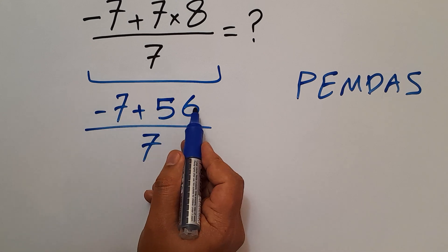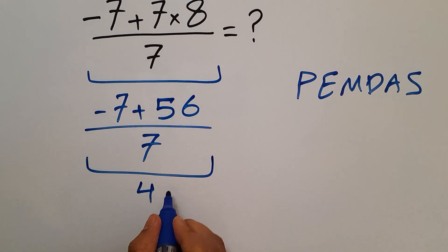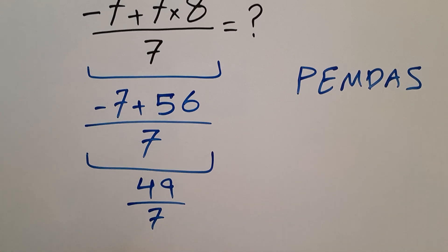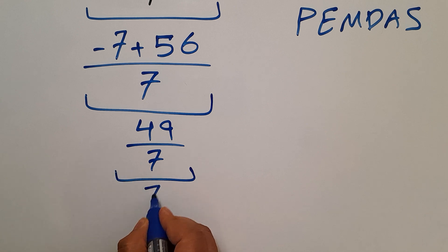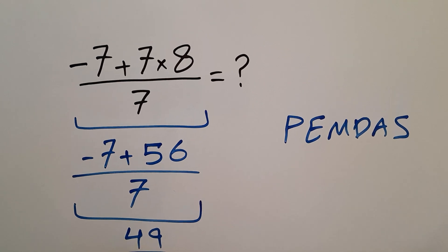And here negative 7 plus 56 equals 49, so 49 divided by 7. And 49 divided by 7 equals 7. Therefore our final answer to this problem is 7.